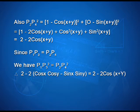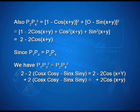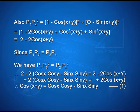That means 2 − 2(cos x·cos y − sin x·sin y) equals 2 − 2cos(x+y). The 2 being common on both sides cancels out, and we get that cos(x+y) can be expressed as cos x·cos y − sin x·sin y. This is an important identity we can use to solve problems.